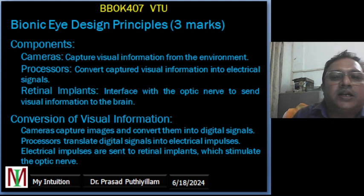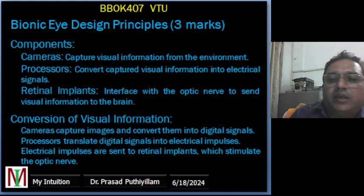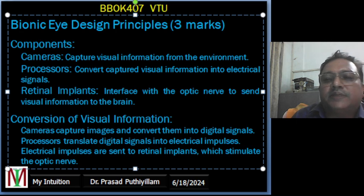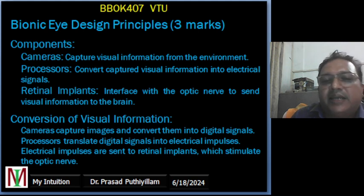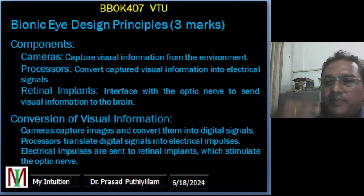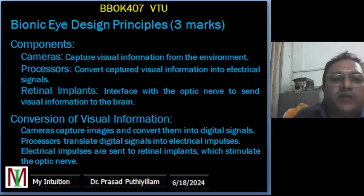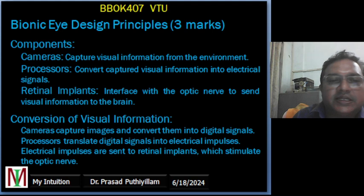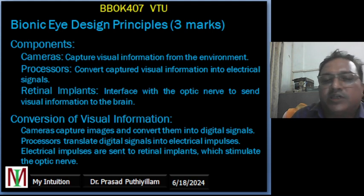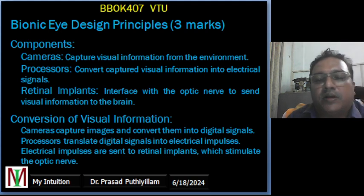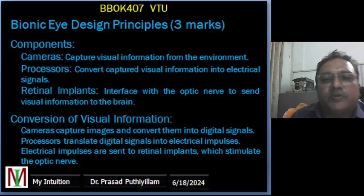The retinal implants, placed on the retina near the optic nerve, receive the electrical impulses from the processor and stimulate the optic nerve, sending visual information to the brain. Regarding conversion of visual information: the bionic eye operates on the principle of converting visual information into electrical signals. The camera captures images and converts them into digital signals representing the intensity and color of light. The processor analyzes the digital signals and generates electrical impulses corresponding to the captured image. The retinal implants transmit these impulses to the optic nerve by mimicking natural stimulation processes.